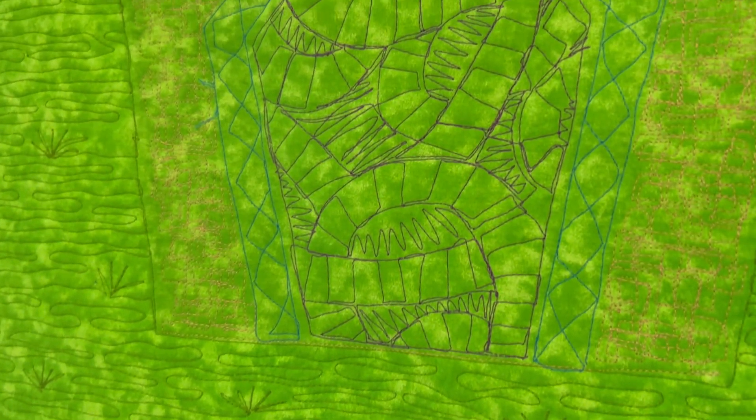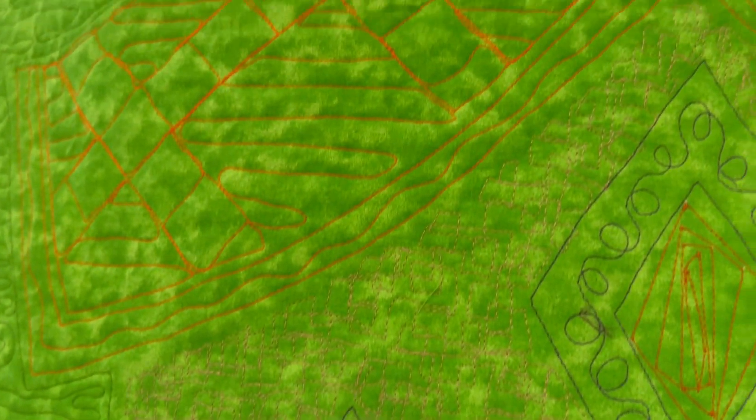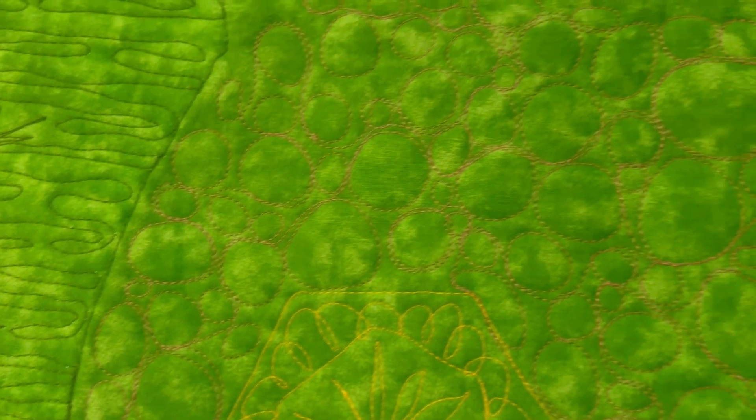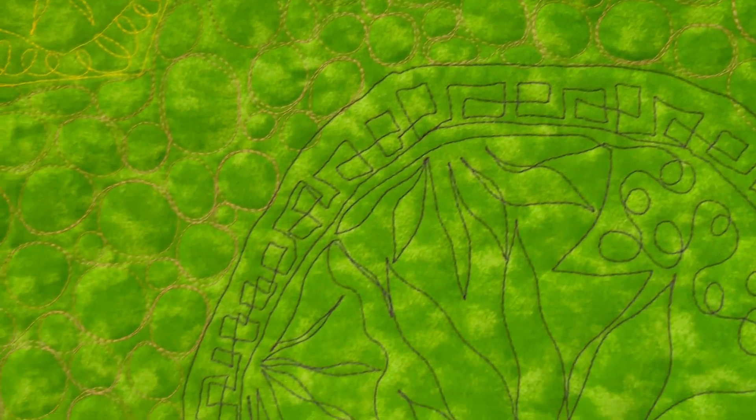The quilting stands out a little bit more on the back because I always match thread to the front. Here you can see the crazy quilting in the house. I was following the fabric on a lot of it. Here you see the leaves in the tree and the pebble quilting from one of the other houses and the doorway with some crazy fabric.